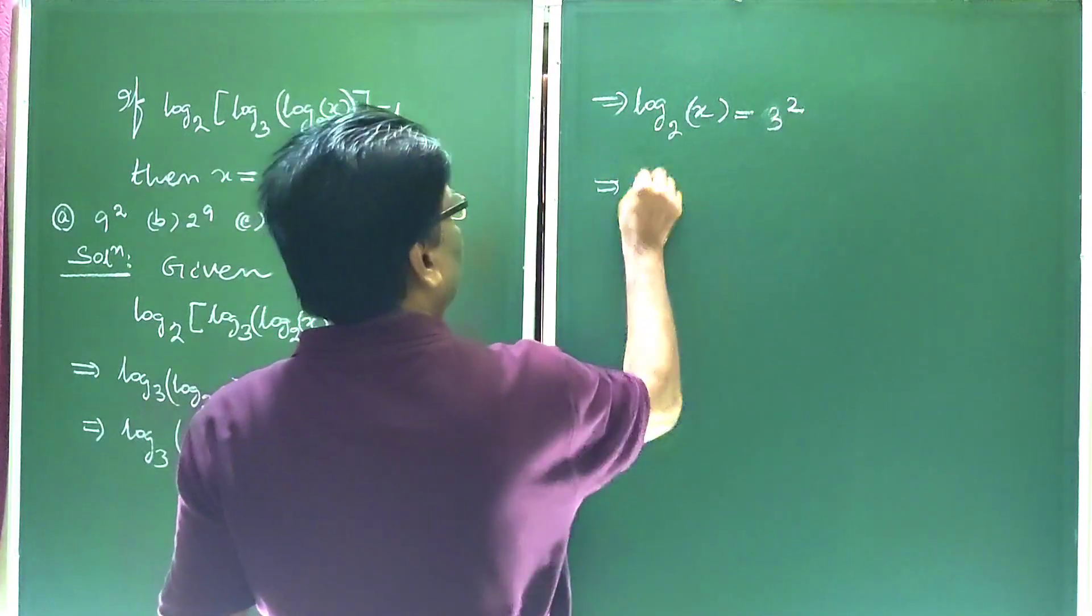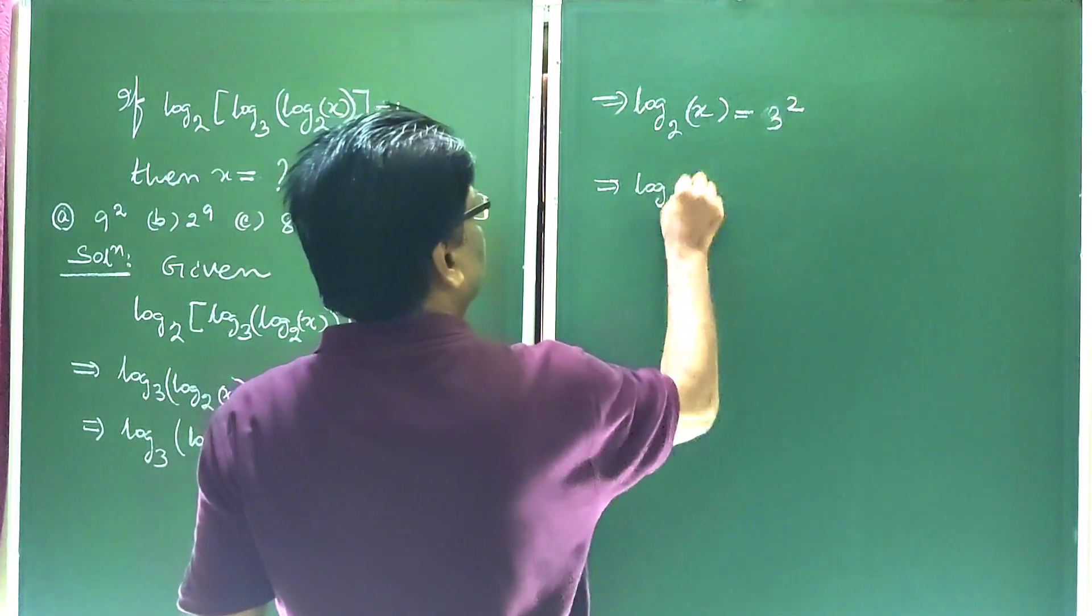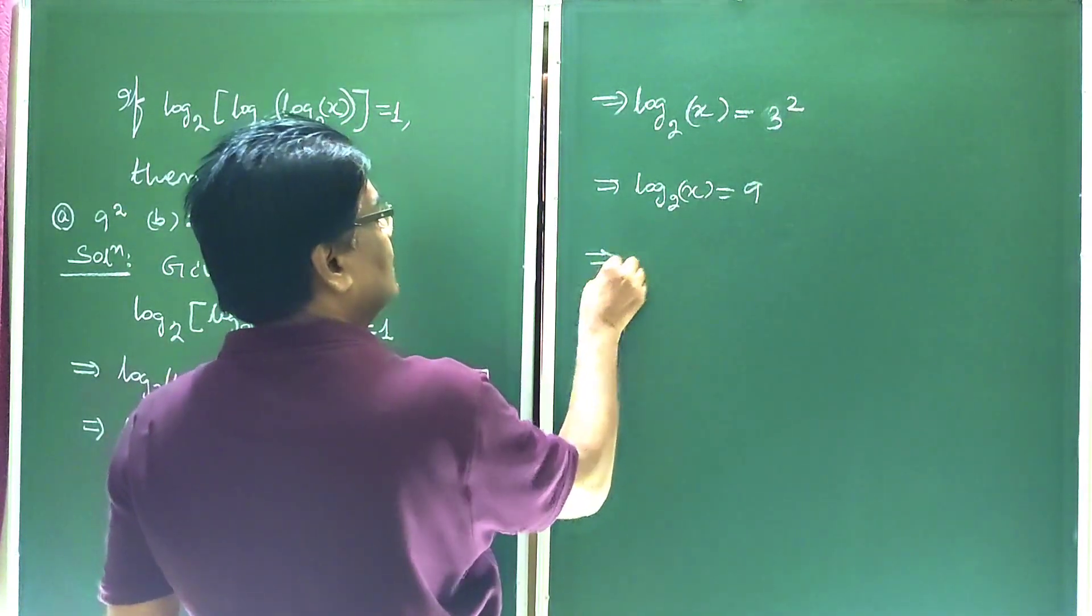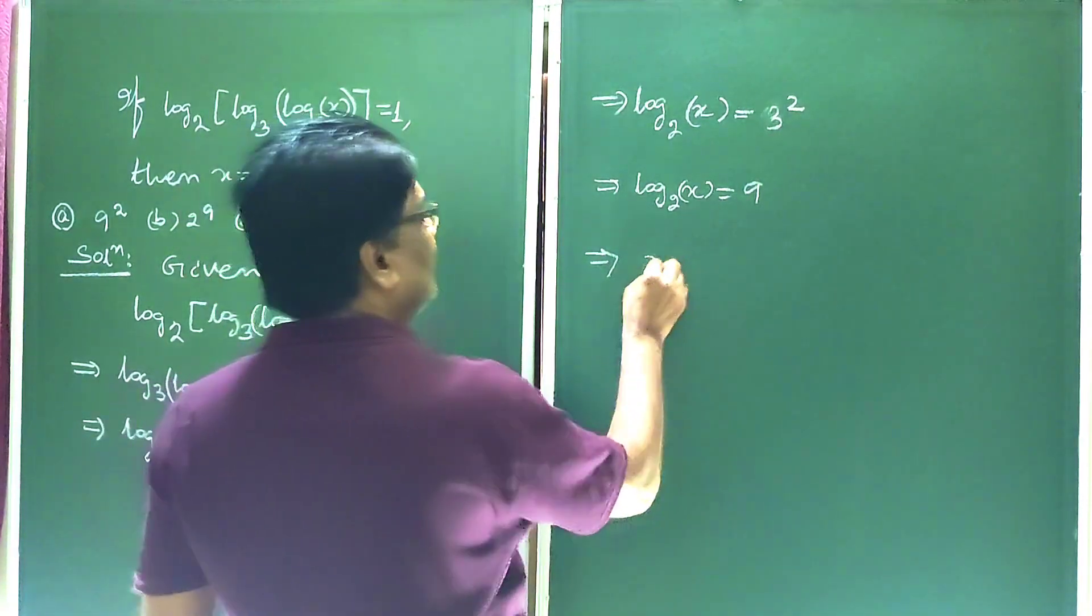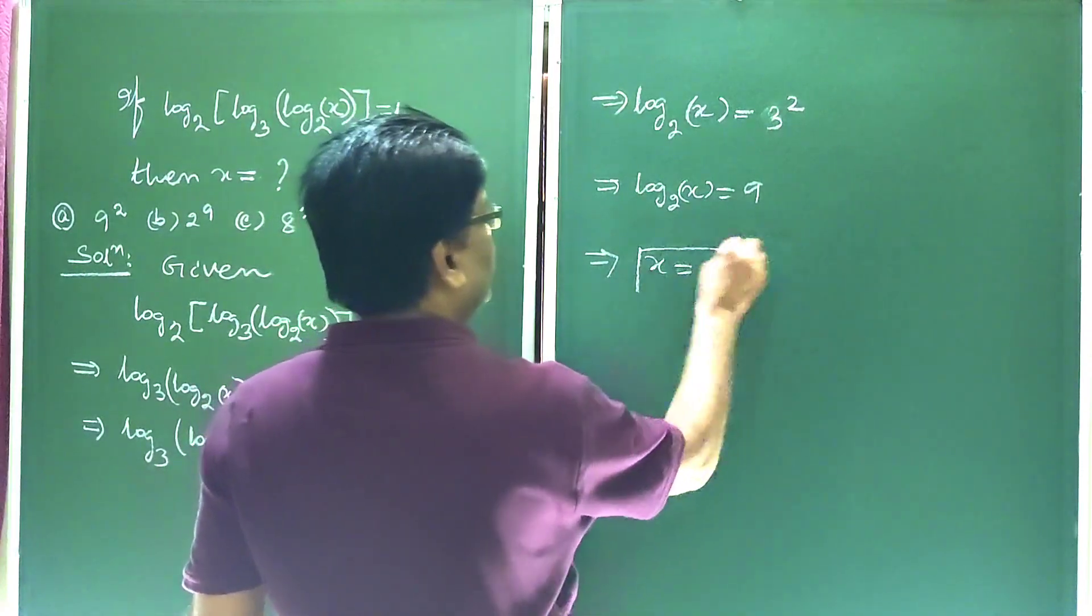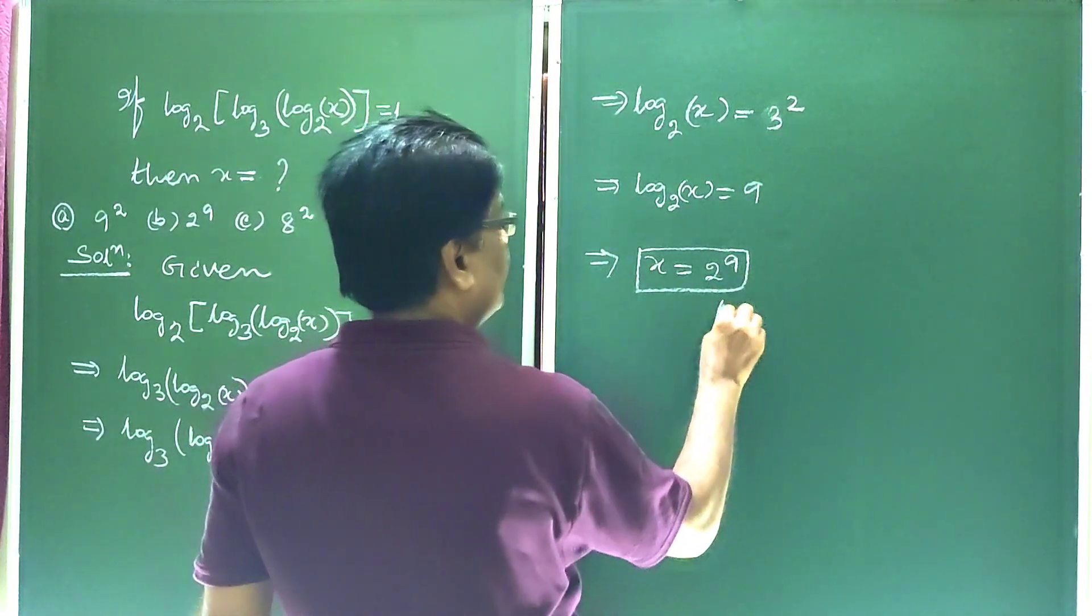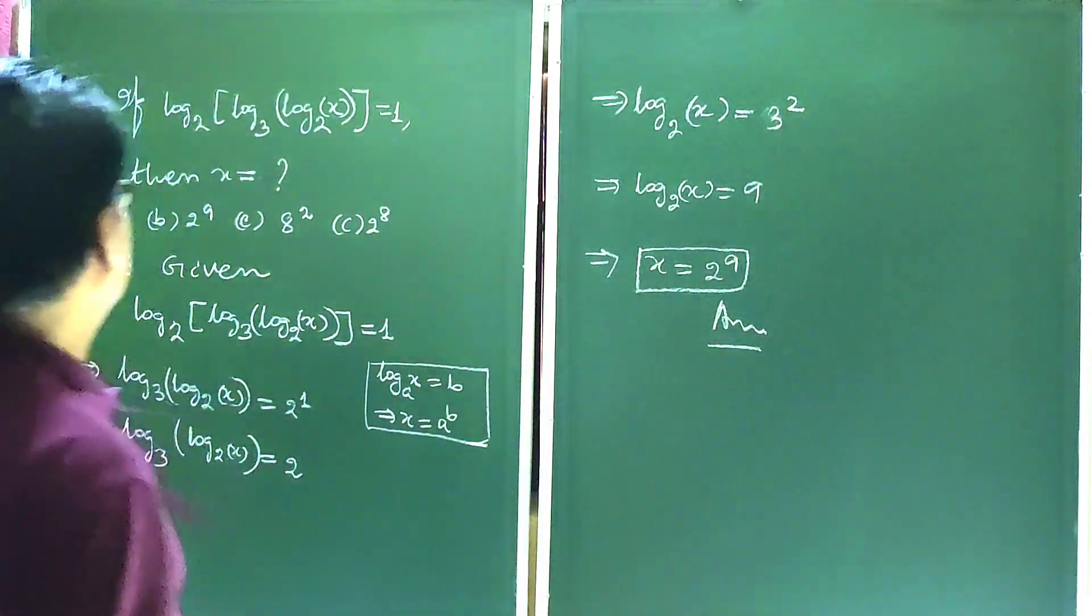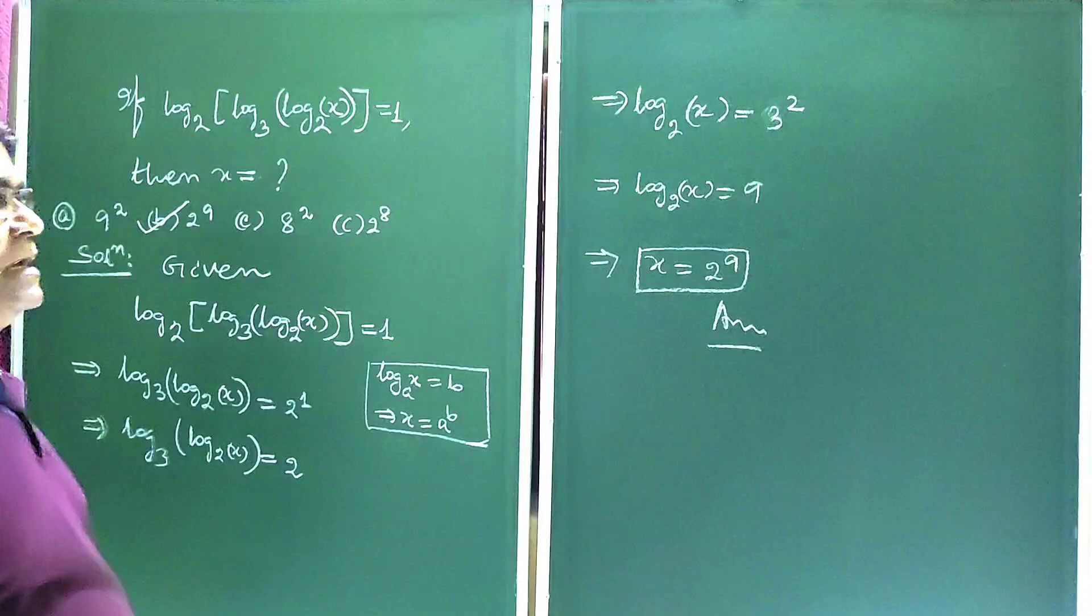This implies log base 2 of x is equal to 9. This implies x is equal to 2 to the power 9. So b is the correct answer.